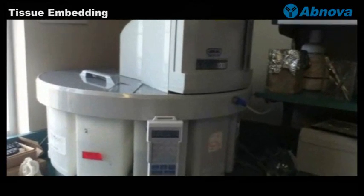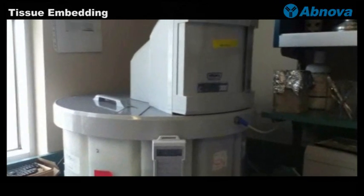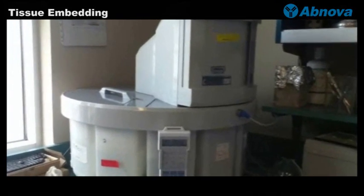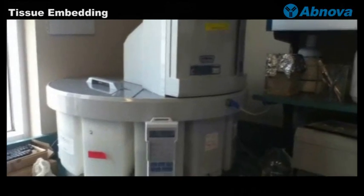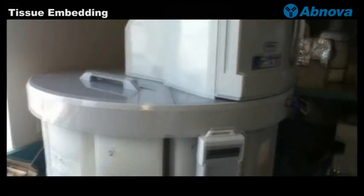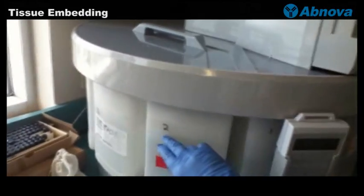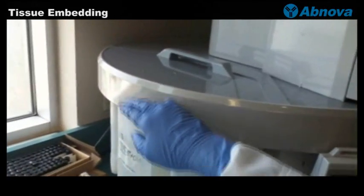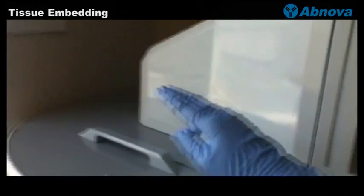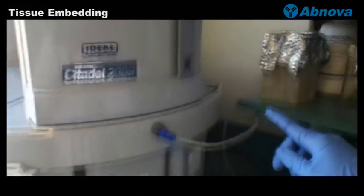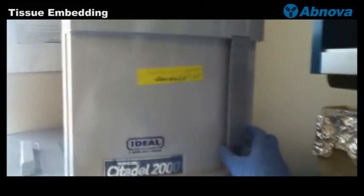Before we start the tissue embedding, the tissue has to be processed through this automated processing machine that has multiple stages like PBS, 50% ethanol, and then a gradual increase to 100%, and then cyanine, all the way to paraffin.